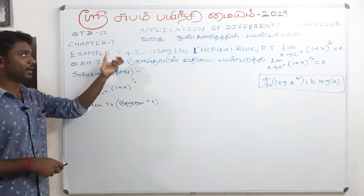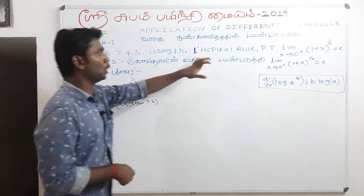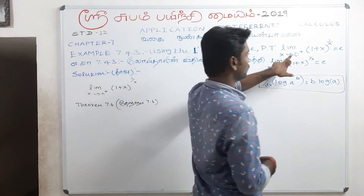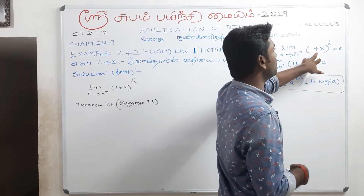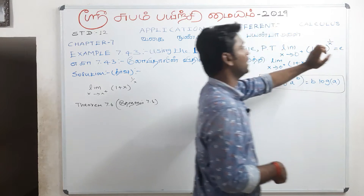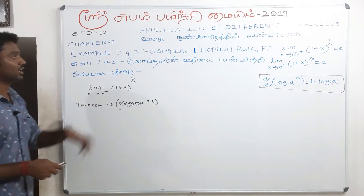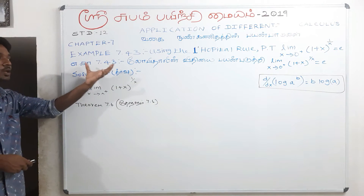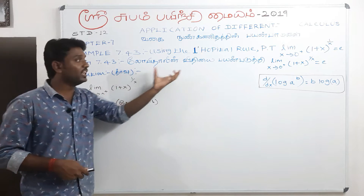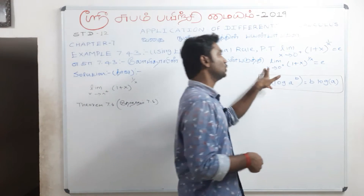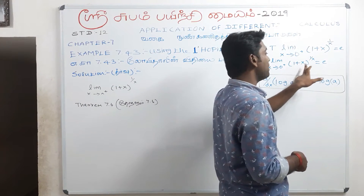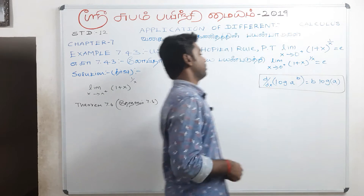Example 7.43: Using L'Hôpital's rule, prove that limit x to 0 plus of (1 plus x) to the power 1 by x equals e. Now the solution for Example 7.43: limit x to 0 plus of (1 plus x) to the power 1 by x equals e.